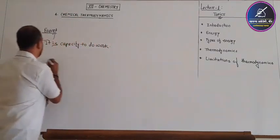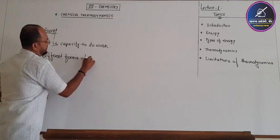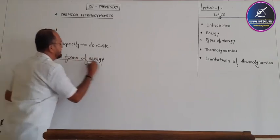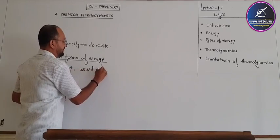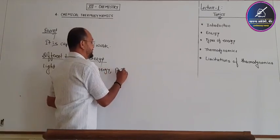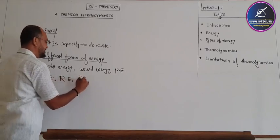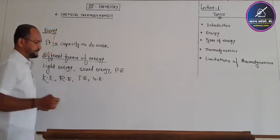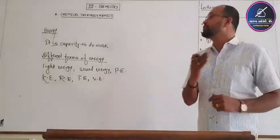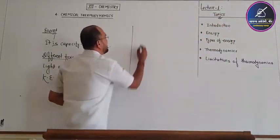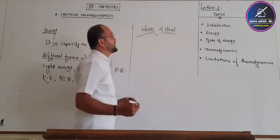Now we should know the different forms of energy. We know that light energy, sound energy, potential energy, kinetic energy, rotational energy, and vibrational energy of molecules are the different forms of energy. But in this chapter we are going to discuss two most important forms of energy, and those are work and heat. These are the two important forms of energy.